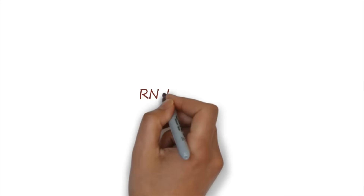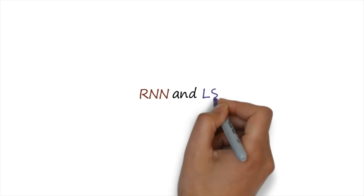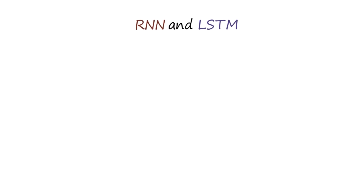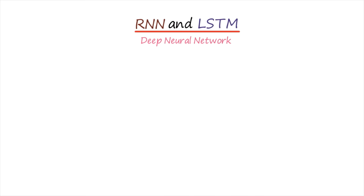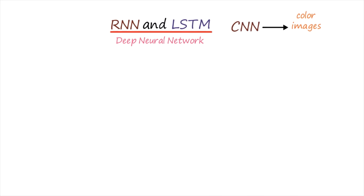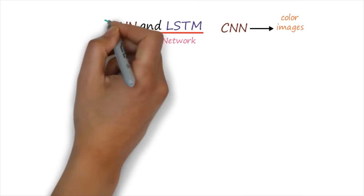Today we will talk about recurrent neural network and then we will talk about long short-term memory or LSTM. Before starting these two concepts, let me tell you what is the main application area of these two types of neural network. These two networks are basically a part of deep neural network. Yesterday we were talking about CNN, and we know that CNN works on images. You have to understand which application areas are suitable for RNN and LSTM.